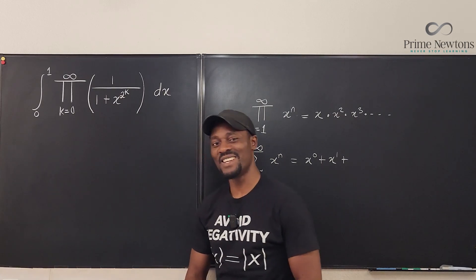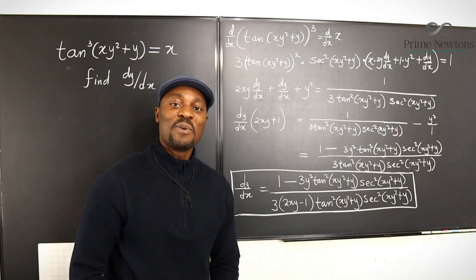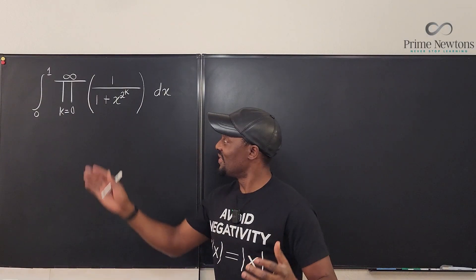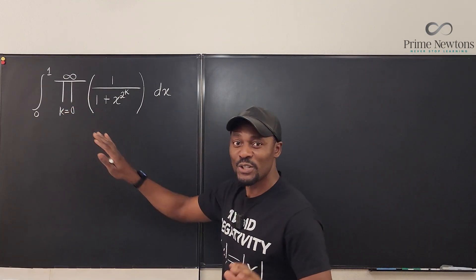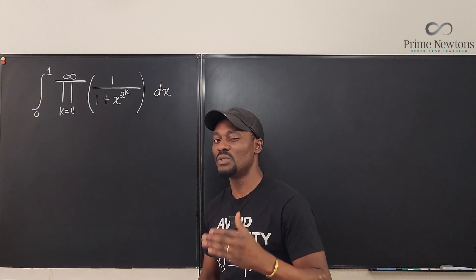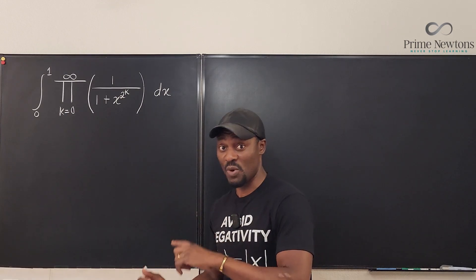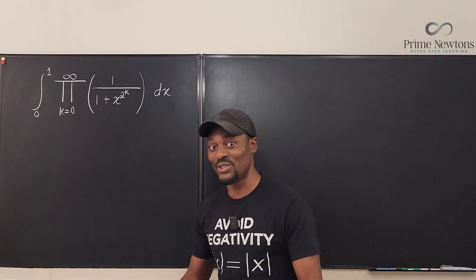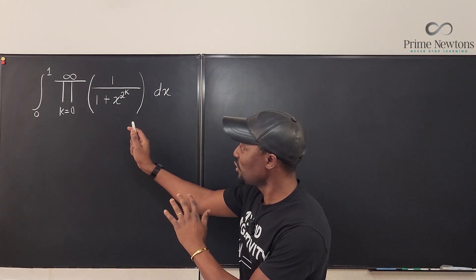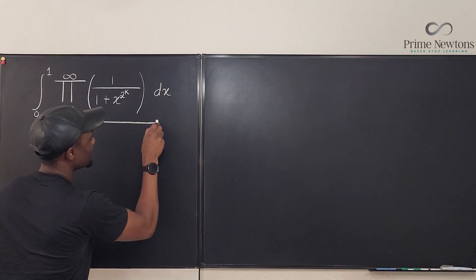Now that we understand what this notation means, what you should always do if you don't have a straight-up answer is to write out the first few terms of what you have, and then you begin to see a pattern. The hard part of this question is the pre-calculus part; the easy part is the calculus. So I'm going to ignore the integration for now and focus on expanding the product.